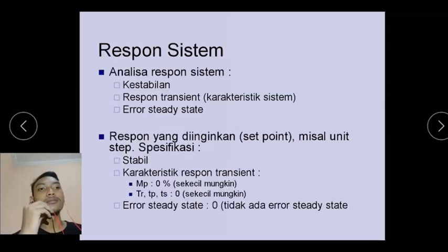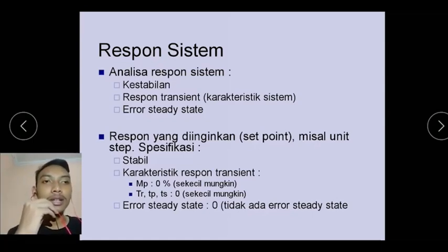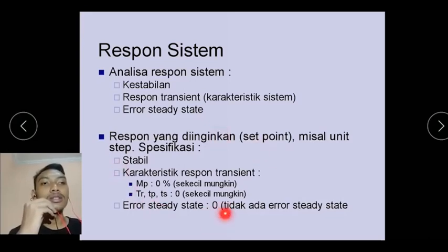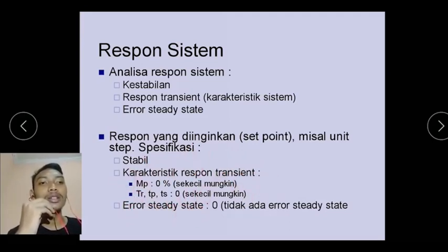Response system: analisa response system yang pertama kita butuh kestabilan, yang kedua kita butuh response transient, dan yang ketiga kita butuh error steady state. Set point yang kita berikan adalah kita minta sistemnya stabil. Karakteristik response transient yaitu MP bernilai 0% atau sekecil mungkin, dan nilai TR, TP, dan TS mendekati 0 atau sekecil mungkin. Yang terakhir nilai error steady state nya 0 atau tidak ada error steady state.